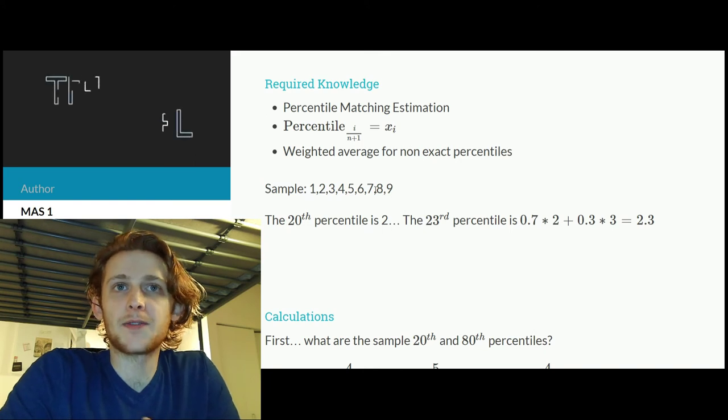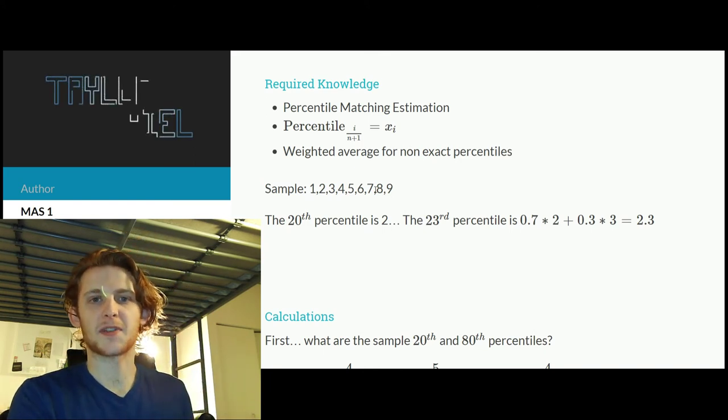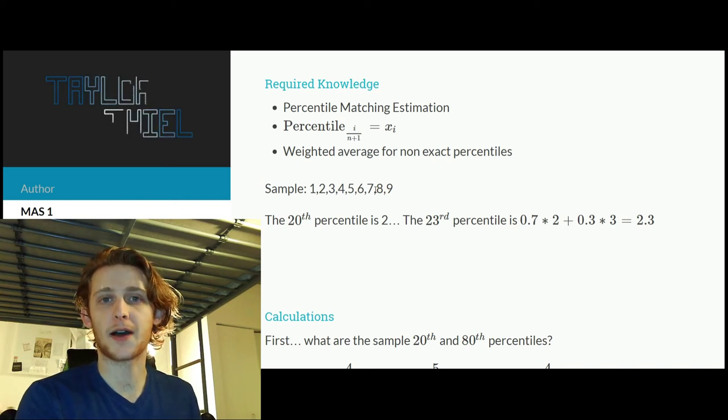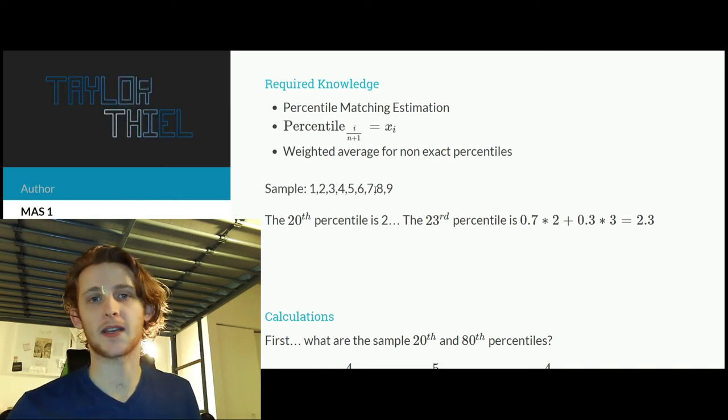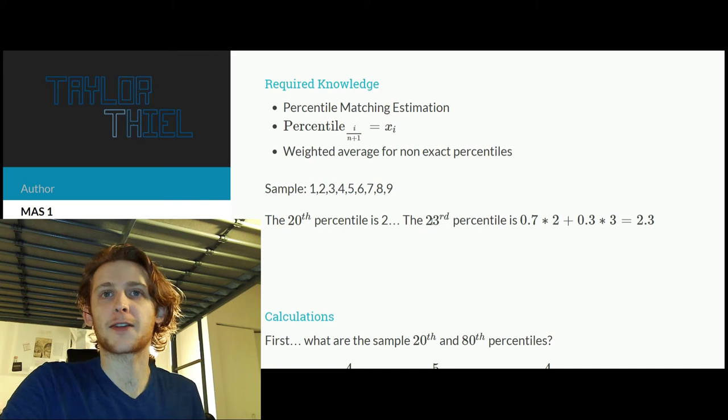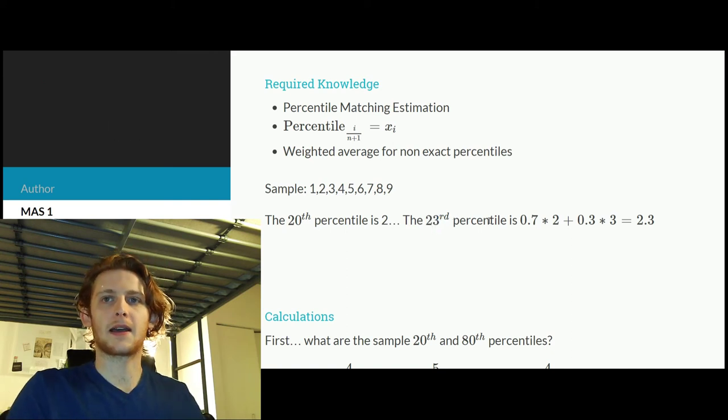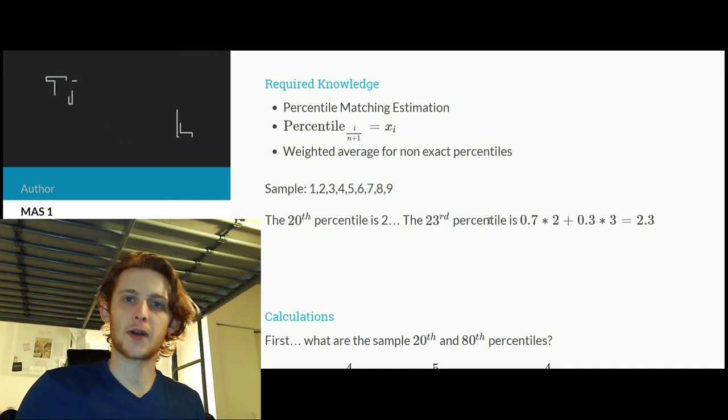If I wanted to estimate the 20th percentile, well that's really simple. What is the 2 over 9 plus 1? We have that exact value, so I would say the second from the smallest observed value is my estimation for the 20th percentile.